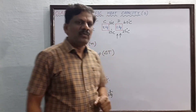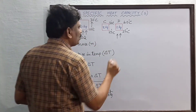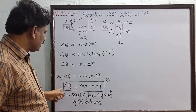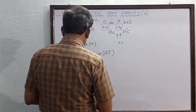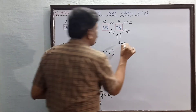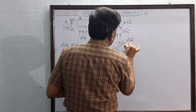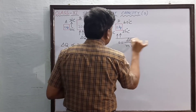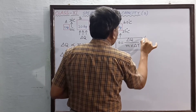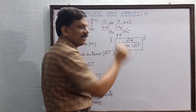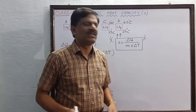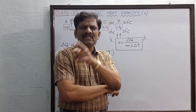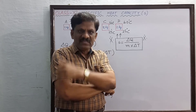From this equation, we can write: s = delta Q divided by (m × delta T). This is another standard equation anyone should remember. This is the mathematical expression for specific heat capacity.